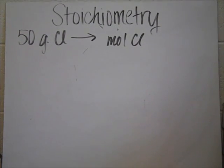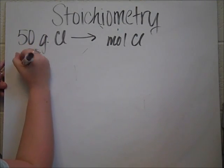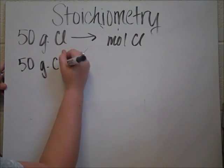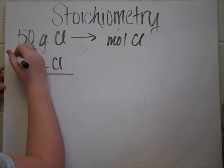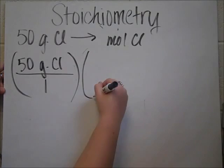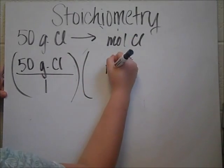And this is our second example of stoichiometry. In this problem, we're going to put 50 grams of chlorine to moles of chlorine. And so we're going to put what you got over 1 again. So we're going to have 50 grams of chlorine over 1. That's our first step. And then what we want is moles of chlorine.